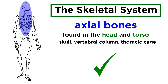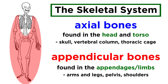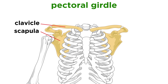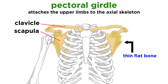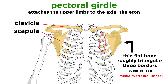With the axial skeleton complete, let's move on to the appendicular skeleton. While this is mainly just our limbs, there are other components to mention as well. Let's start with the pectoral girdle. This is comprised of the clavicle, or collarbone, and the scapula, or shoulder blade, which together gives structure to the shoulder, thereby attaching the upper limbs to the axial skeleton. The clavicle has a sternal end where it attaches to the manubrium, and an acromial end which joins the scapula. The scapula is a thin, flat bone, roughly triangular, and it has three borders: the superior, the medial or vertebral, and the lateral or axillary.